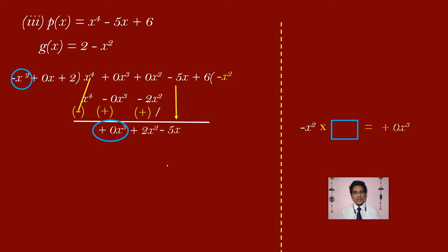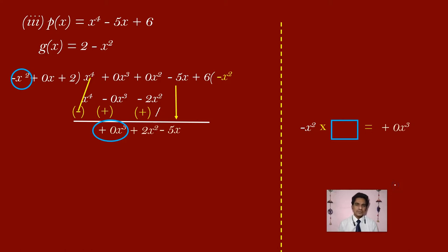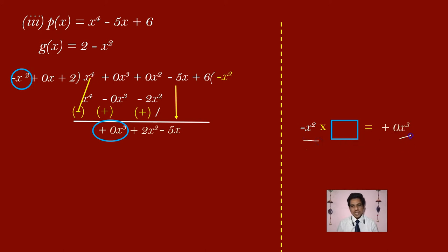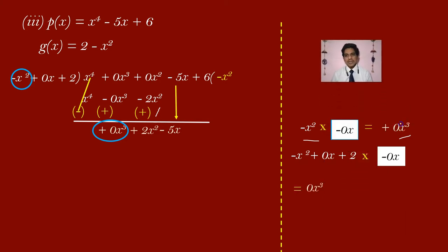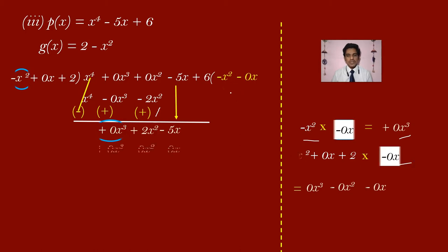Minus x square multiplied by 0x gives 0x cube. Since 0 multiplied by everything gives 0, multiplying the whole divisor by 0x gives 0x cube, 0x square, and 0x. Write 0x in the quotient. Do the subtraction: 0x cube and 0x cube cancel. Plus 2x square and 0 gives plus 2x square. Minus 5x and 0 gives minus 5x. Carry plus 6.